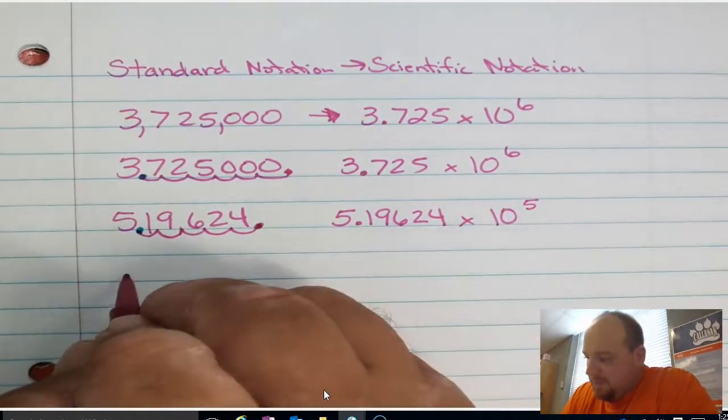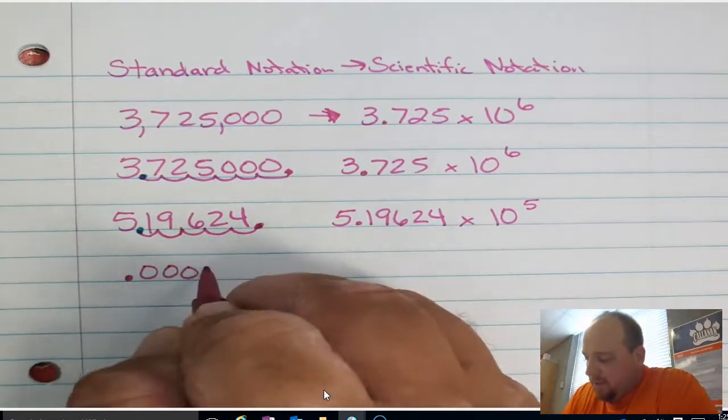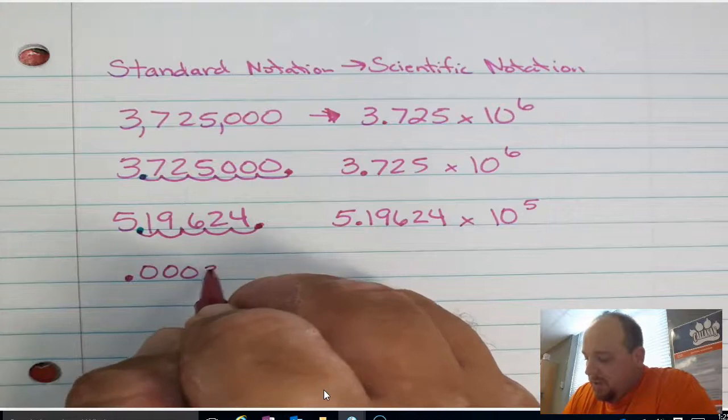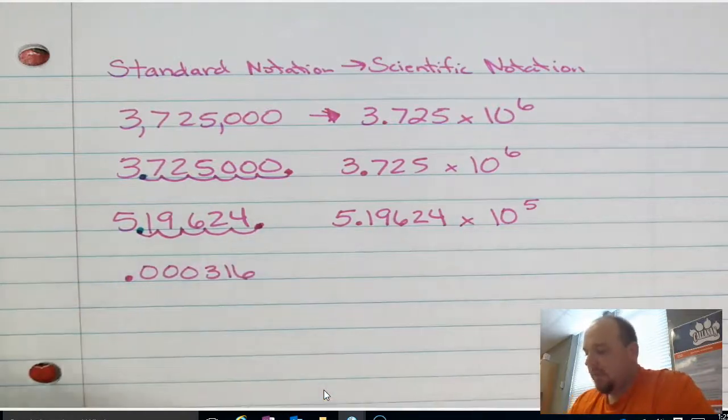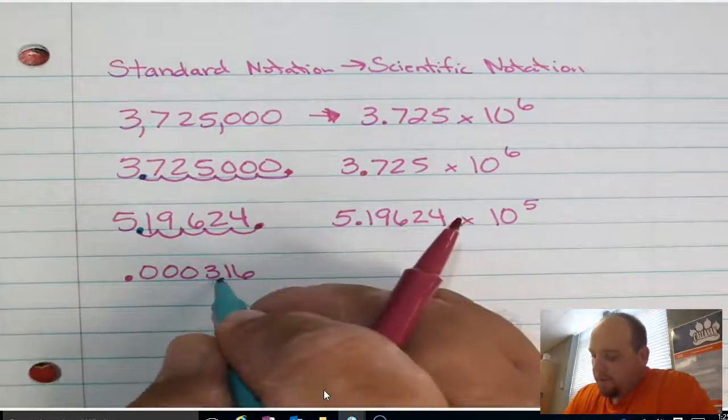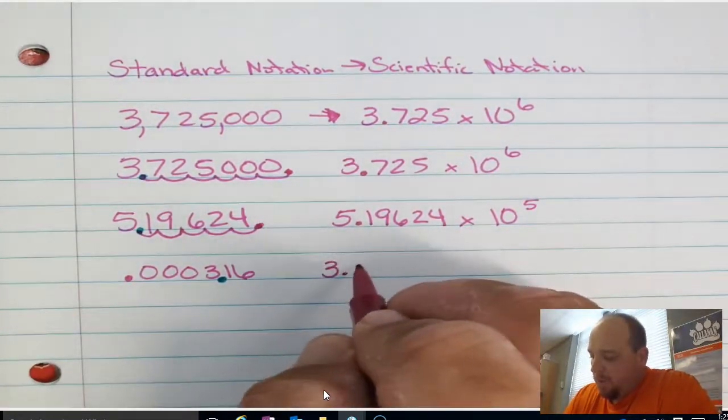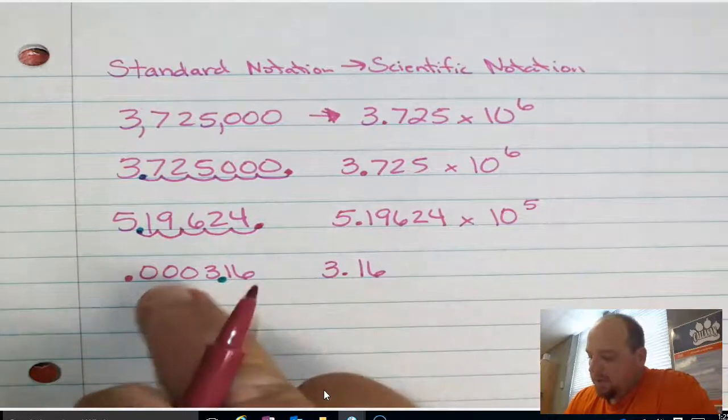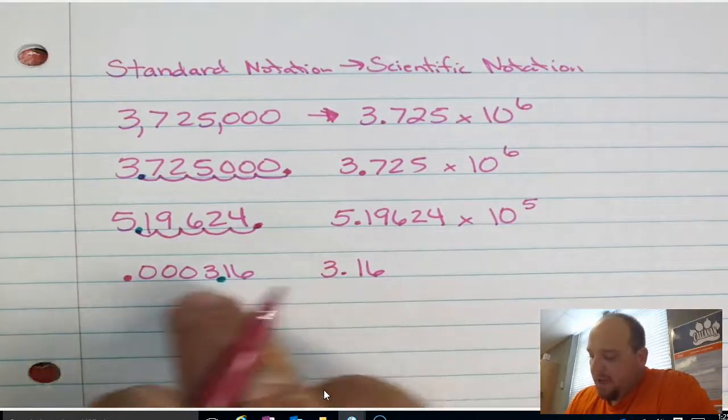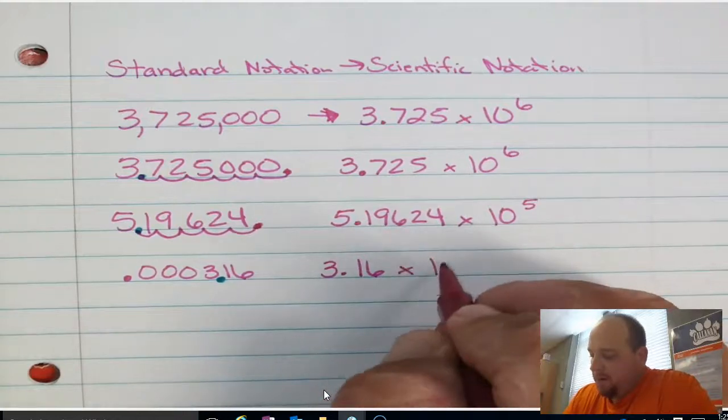So let's show you with decimals, what does it look like with factors and powers of 10? So if I ever have this decimal, 0.000316. Again, where would I move the decimal so that I'd have a factor between 1 and 10? Put it right here between the 3 and the 1. When I do that, I end up with this factor of 3.16. I don't need these zeros in front of the 3 because they're not holding place values at all. We're going to multiply by a power of 10.